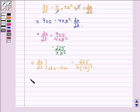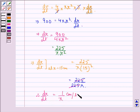This equals 225/(225π). The 225 cancels, and therefore dr/dt, the rate at which the radius of the balloon is increasing, equals 1/π cm per second.